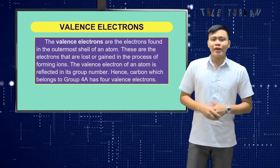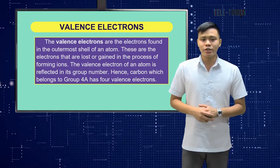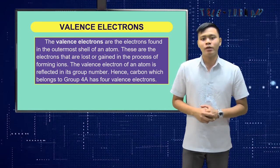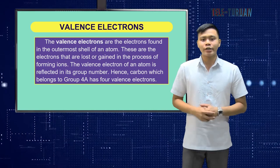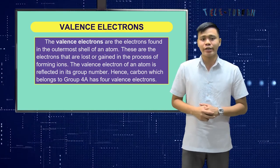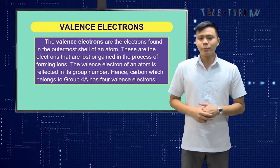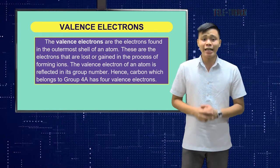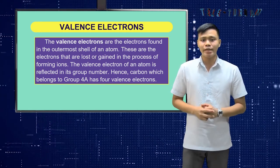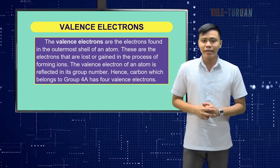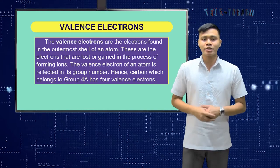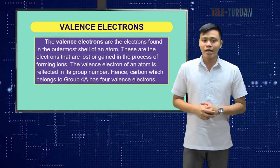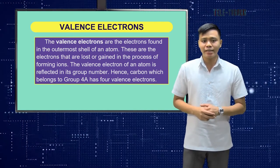The valence electrons are the electrons found in the outer shell of an atom. These are the electrons that are lost or gained in the process of forming ions. The valence electrons of an atom are reflected in its group number. Hence, carbon, which belongs to group 4A, has four valence electrons.